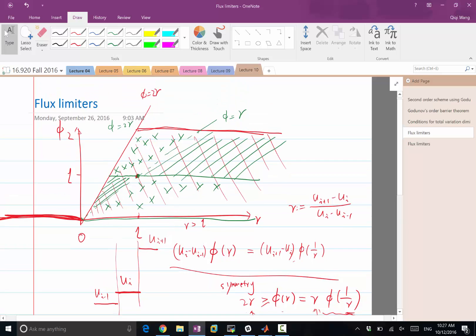So the only region we can get both a monotonic scheme and a second-order accuracy is within this region. So for r greater than 1, φ has to be greater than 1 and less than the minimum of r and 2. So for r less than 1, greater than 0, φ has to be greater than r and less than the minimum of 2r and 1. So these are the two criterions we have to satisfy for a second-order and a monotonic scheme.